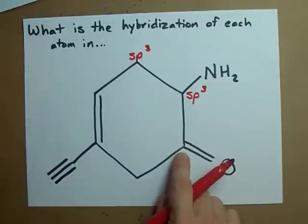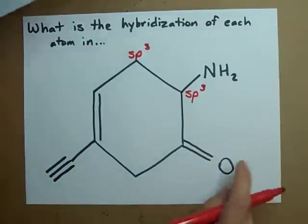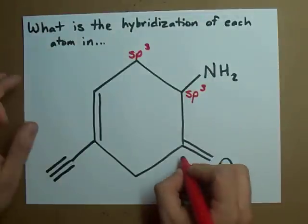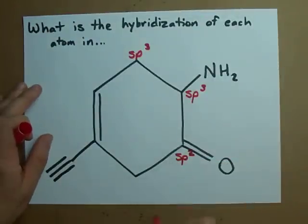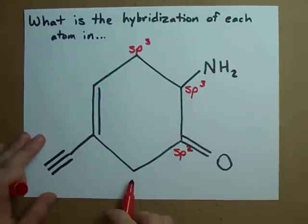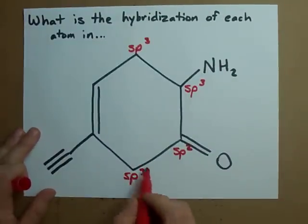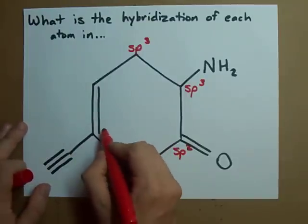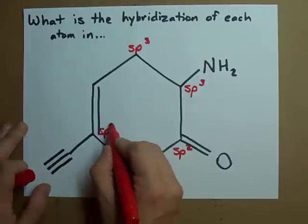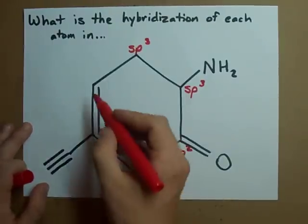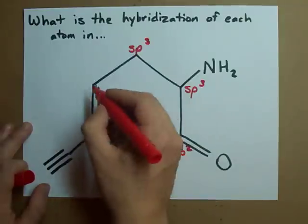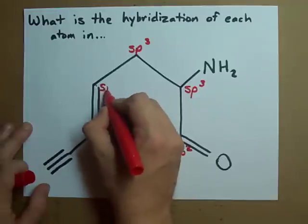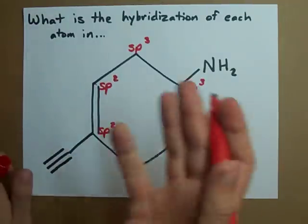Here's a carbon that has one double bond attached to it — one double bond means it's sp2. This one has no multiple bonds, so it's sp3. This carbon here has one double bond attached to it, so it must be sp2. Same with this one — just one double bond — must be sp2.